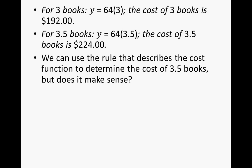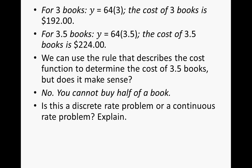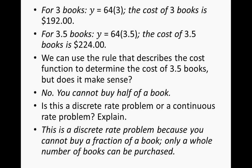We can use a rule that describes a cost function to determine the cost of three and a half books, but does it make sense? Well, no, you cannot buy half of a book. Is this a discrete rate problem or a continuous rate problem? You should have said this is a discrete rate problem because you cannot buy a fraction of a book. Only a whole number of books can be purchased.